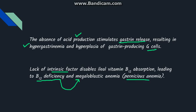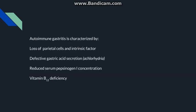A specific type of megaloblastic anemia due to deficiency of intrinsic factor is known as pernicious anemia. To summarize the characteristics: there is loss of parietal cells, loss of intrinsic factor, achlorhydria, reduced pepsinogen concentration, increased gastrin production, and vitamin B12 deficiency.